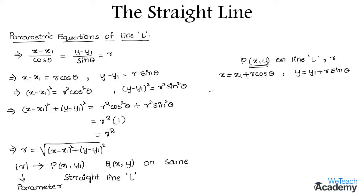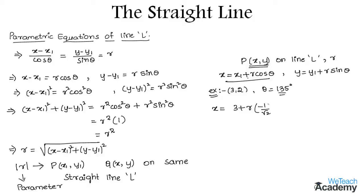Now let us discuss an example. We need to write the parametric equations of a straight line passing through the point (3, 2) and making an angle of 135° with the positive x-axis. Using the parametric equations, x = x1 + r cos θ = 3 + r · cos 135° = 3 + r · (−1/√2), which gives x = 3 − r/√2.